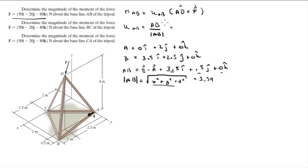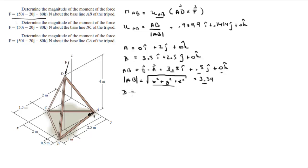The unit vector U_AB is found by dividing the components by the magnitude, giving 0.9899i + 0.1414j + 0k. Now for vector AD: point D sits at 2.5i + 2j + 4k. So AD, which is D minus A, is equal to 2.5i + 0j + 4k.